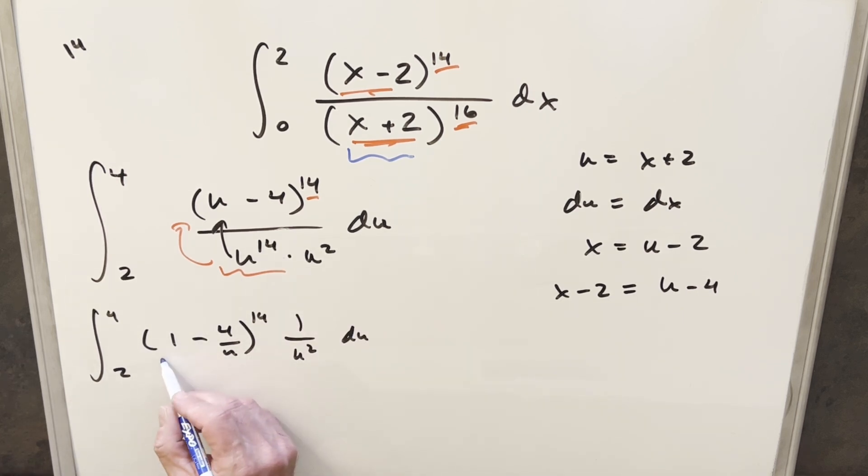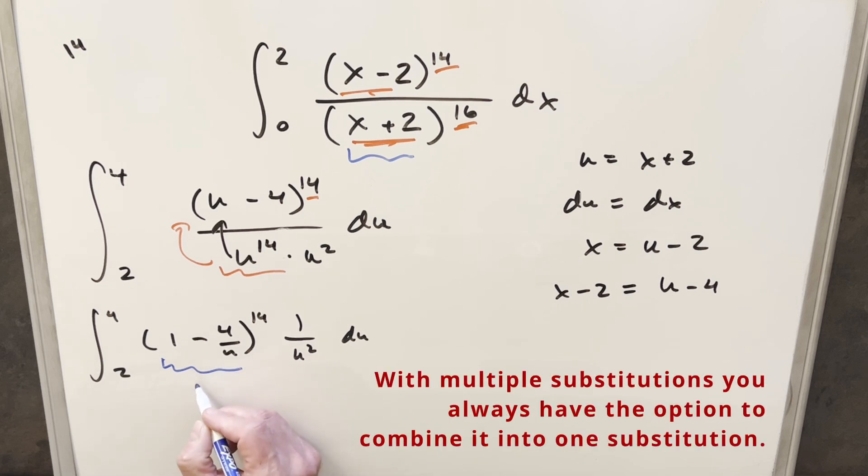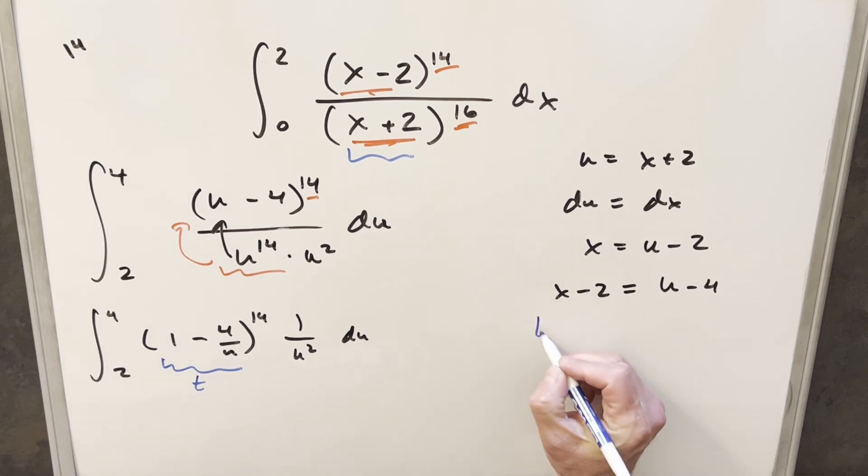But then at this point, let's just do another substitution, because if I substitute here, we say we do a t substitution here. Then at that point, we're just going to have t to the 14th, where we can use power rules. So let's see how this substitution is going to work. We'll say t equals 1 minus 4 over u.